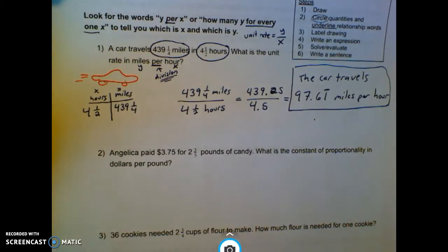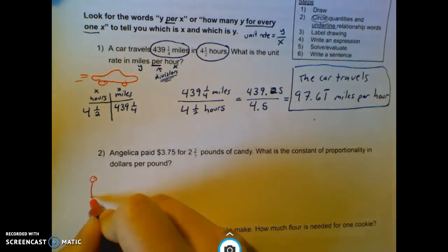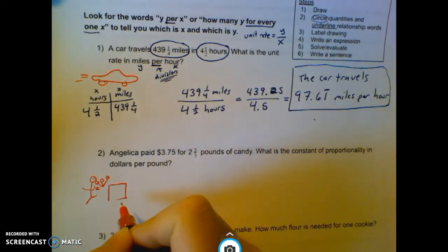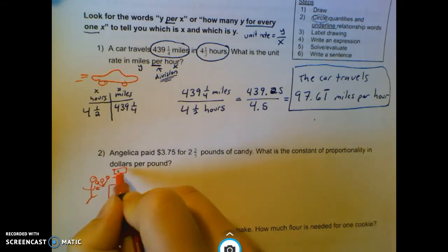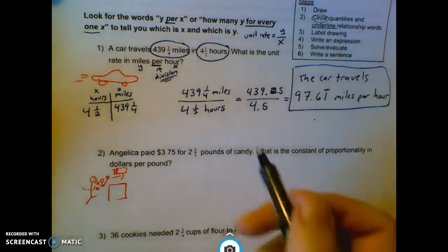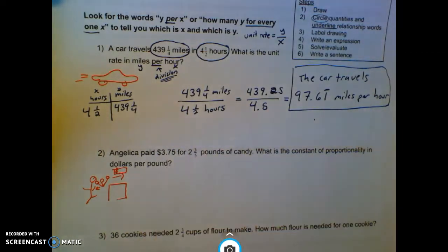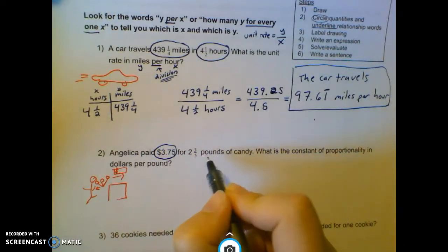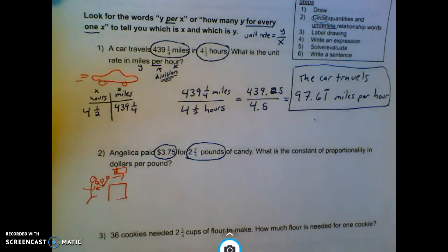So with this same idea, down here we've got Angelica. And she is buying some candy. So let's say here are some lollipops that are coming to her. And she is paying money. So we look through here and we look at our quantities. So she paid $3.75 for 2 and 3 fifths pounds of candy.